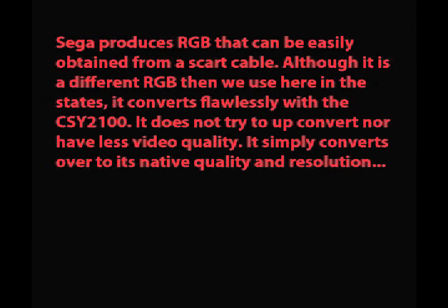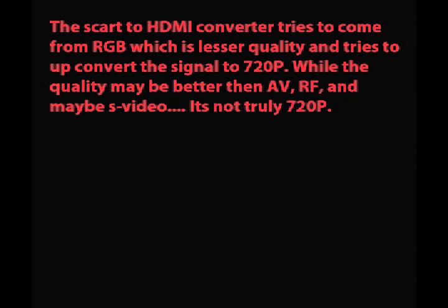Although Sega's SCART RGB is different from what we use here in the States, it converts flawlessly with the CSY-2100. It does not try to up-convert it or reduce video quality — it simply converts to its native quality and resolution. The SCART to HDMI converter, on the other hand, takes RGB — which is lesser quality — and tries to up-convert the signal to 720p. While the quality may be better than AV, RF, and maybe S-Video, it's not truly 720p no matter what your TV tells you.